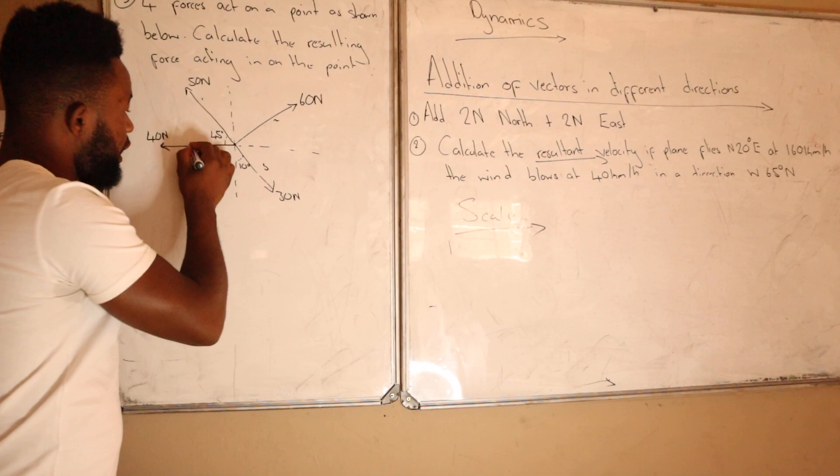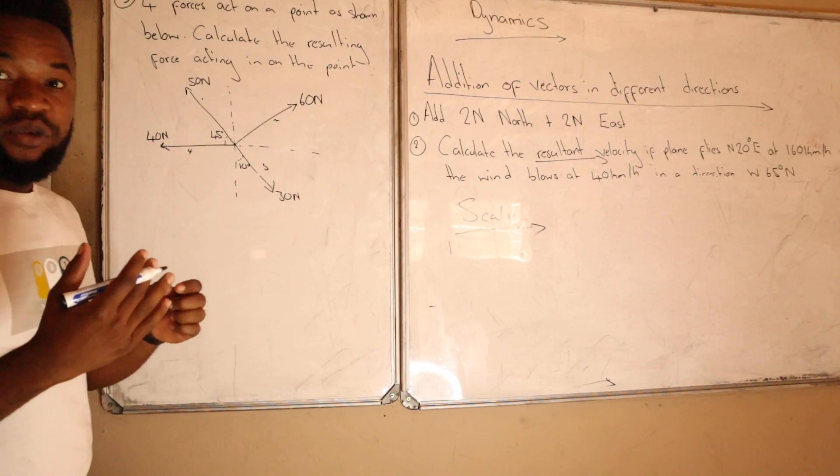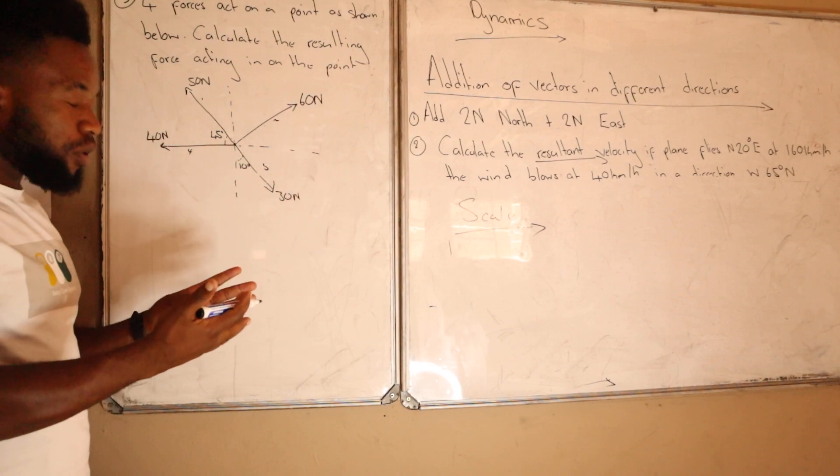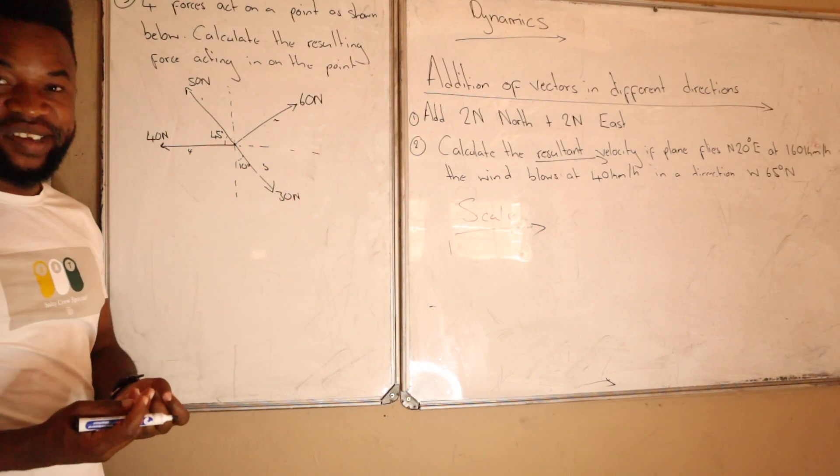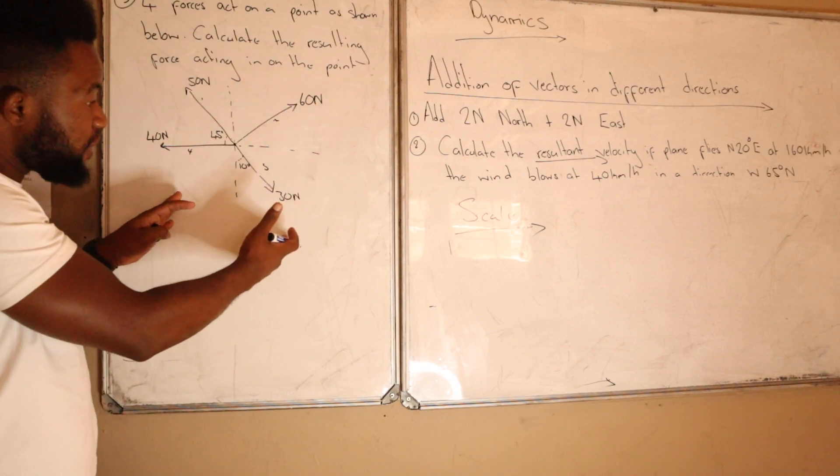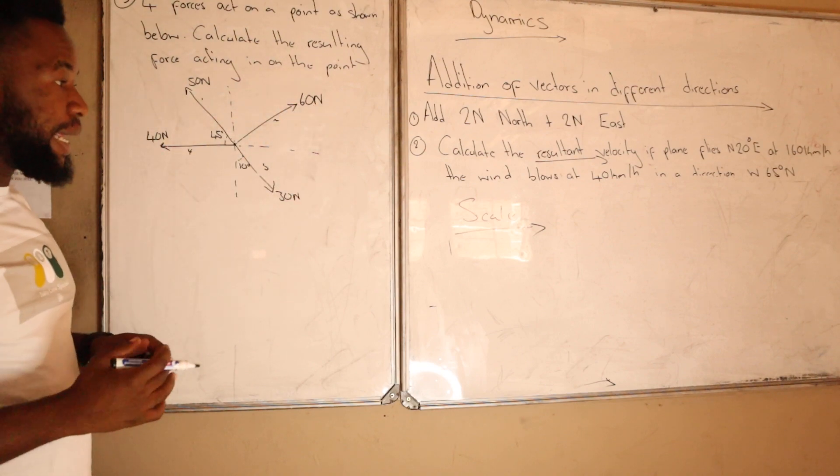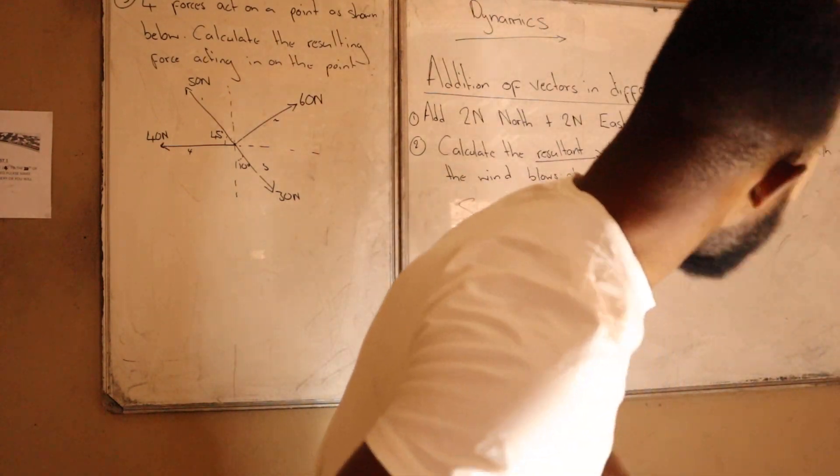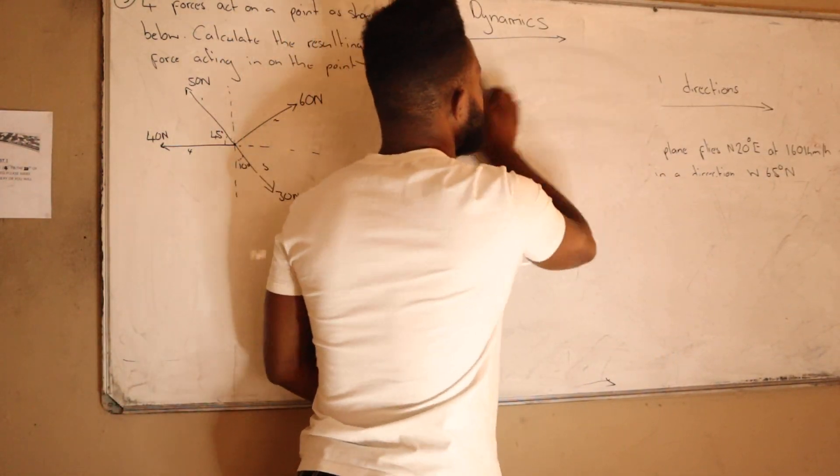What we're going to try to do is basically join all these four forces to have one shape, so I can get my resultant. Let's see how we can obtain that, maybe around this side.